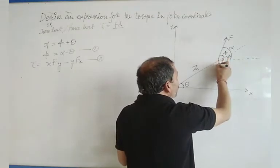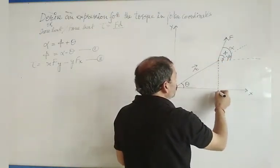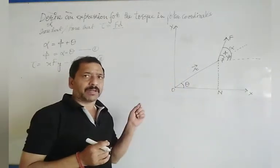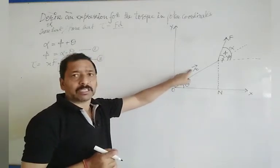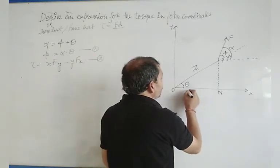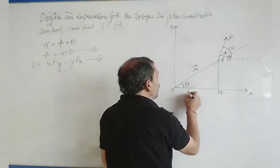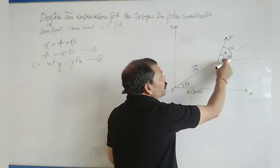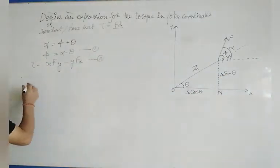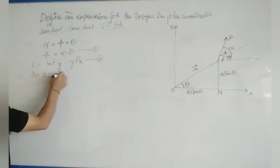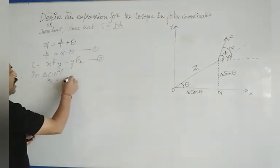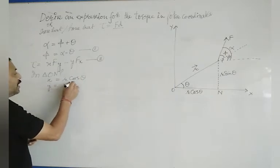Now let's draw a perpendicular here. Then in the triangle, the x-coordinate is R cos theta. This is x. What is x? This is R cos theta. And here in the y-direction, the y-coordinate is R sin theta. In triangle O and P, x-coordinate of the particle which is at point P is equal to R cos theta and y is equal to R sin theta.